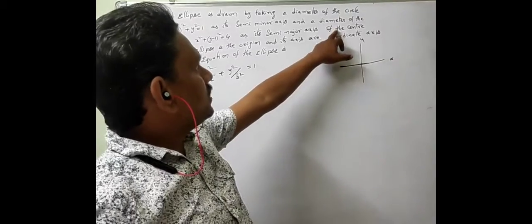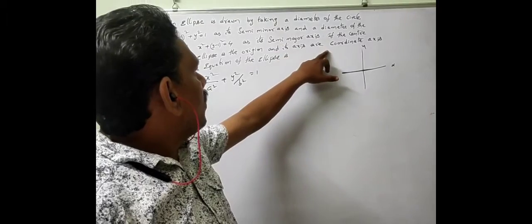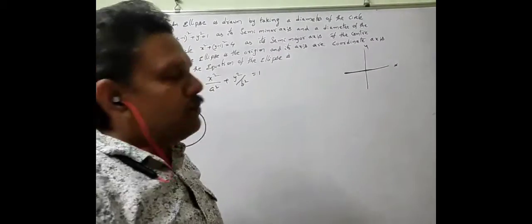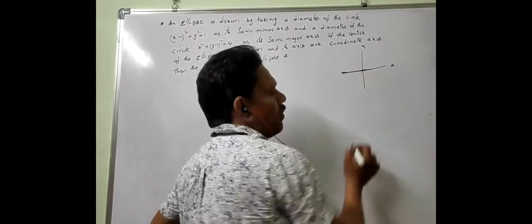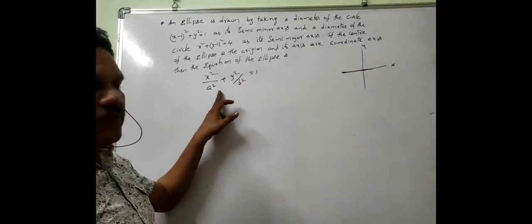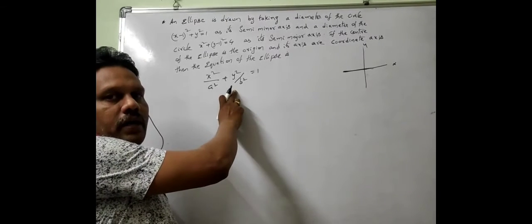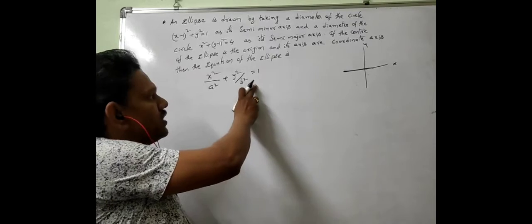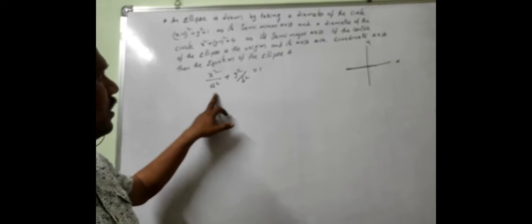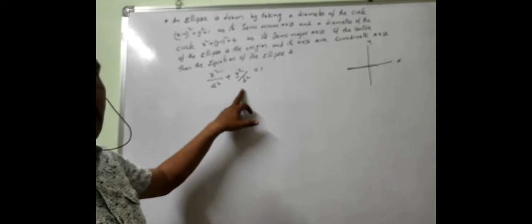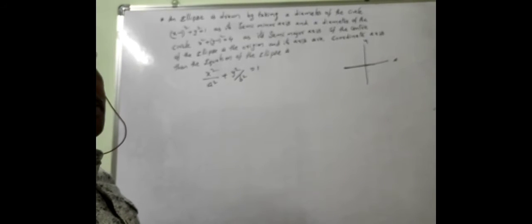The center of the ellipse is given as origin and its axes are coordinate axes. Since the center of the ellipse is origin and the axes are the coordinate axes, the equation of the ellipse will be in standard form — that is, x square by a square plus y square by b square is equal to 1. To find the equation of the ellipse, we need to find the values of a and b.